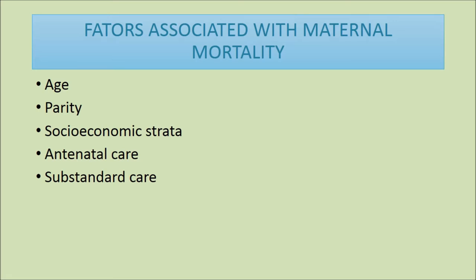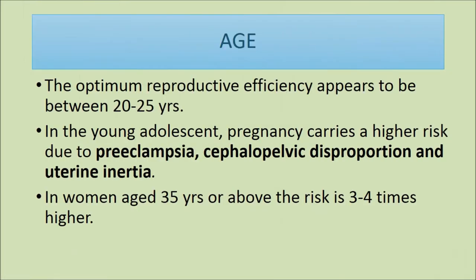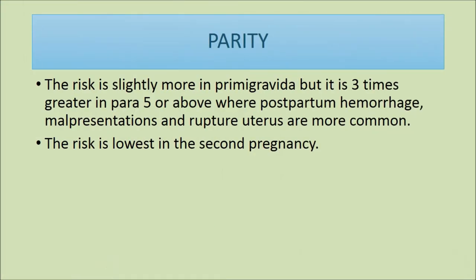The optimum reproductive efficiency appears to be between 20 to 25 years of age. In young adolescent pregnancy, there is a higher risk due to preeclampsia, cephalopelvic disproportion, and uterine inertia. In women aged 35 years or above, the risk is three to four times higher.